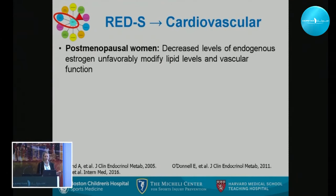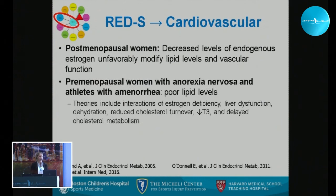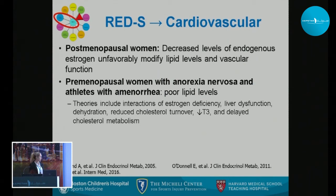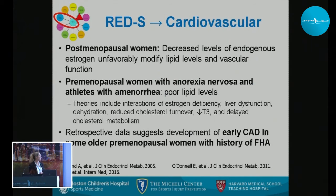Regarding the cardiovascular system: in postmenopausal women, decreased endogenous estrogen unfavorably modifies lipid levels and vascular function. Premenopausal women with anorexia nervosa and athletes with amenorrhea show poor lipid levels. Theories include interactions of estrogen deficiency, liver dysfunction, dehydration, reduced cholesterol turnover, decreased T3, and delayed cholesterol metabolism. Retrospective data suggests development of early coronary artery disease in some older premenopausal women with a history of functional hypothalamic amenorrhea.